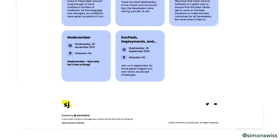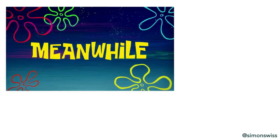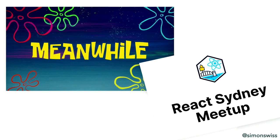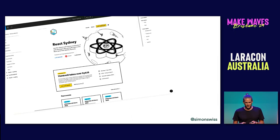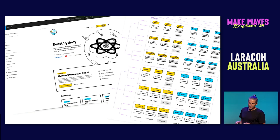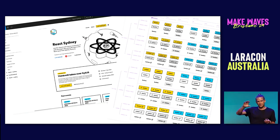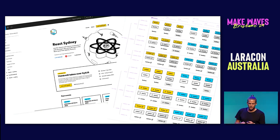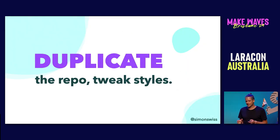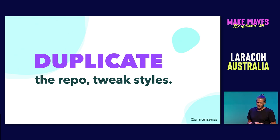There's another meetup in town, React Sydney, that we also organize, and we think we should maybe also build a website for it — there are probably a lot of similarities between the elements. As a developer I start thinking: should I build themeable components, publish them on NPM, set up a monorepo architecture? But before I go too far with the craziness, I think: hang on, we don't know if we're going to ship both these sites, so let's just duplicate the repo and tweak the styles. After all, Tailwind makes it super simple to restyle some UI.